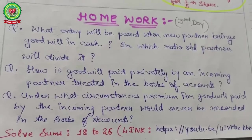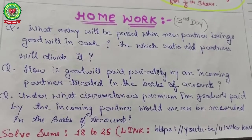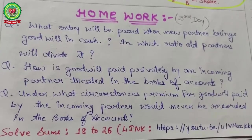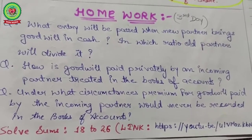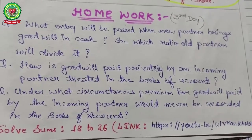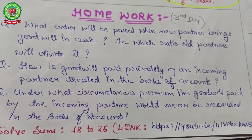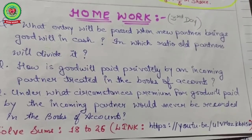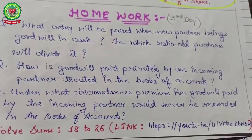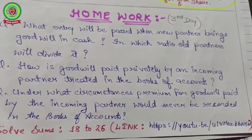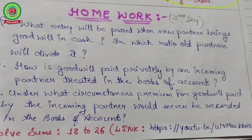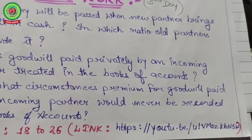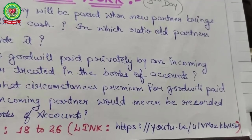Homework questions: (1) What entry will be passed when a new partner brings goodwill in cash, and in which ratio will old partners divide it? (2) How is goodwill paid privately by an incoming partner treated in the books of account? (3) Under what circumstances would premium for goodwill paid by the incoming partner never be recorded in the books of account? Also solve the practical problems and watch the YouTube links for better understanding.